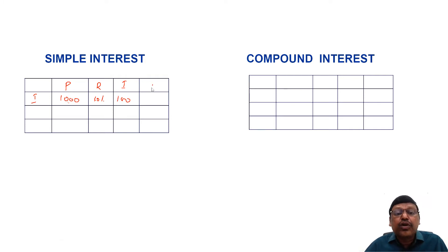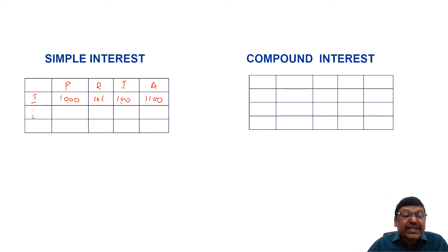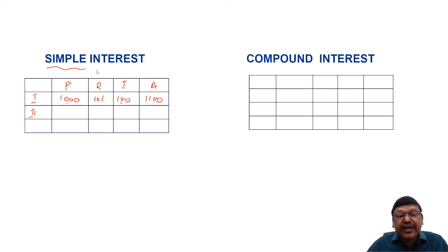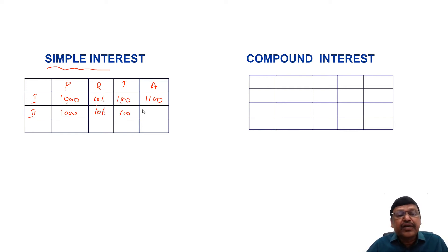So the total amount to be repaid at the end of the first year is 1000 rupees principal plus 100 interest, giving 1100. For the second year, in simple interest, interest is always calculated on the original sum — on 1000 only — again at 10 percent giving 100, so the total repayment at the end of the second year is 1200.